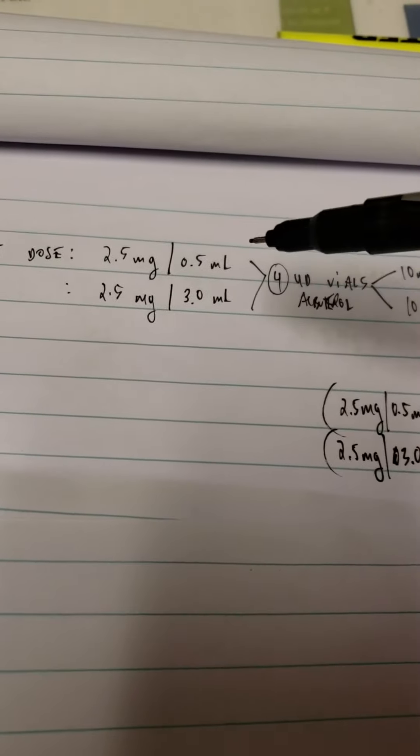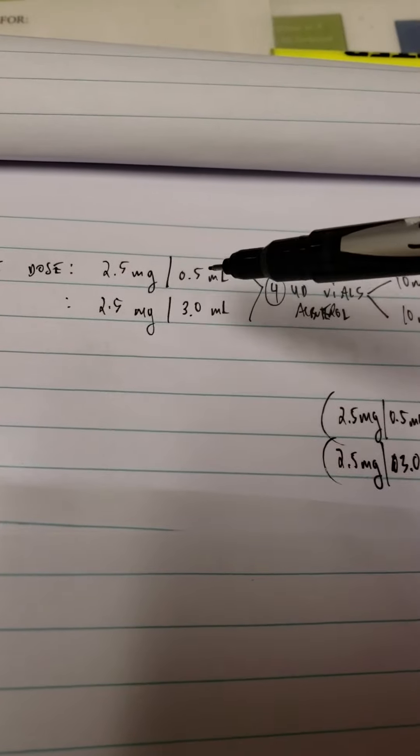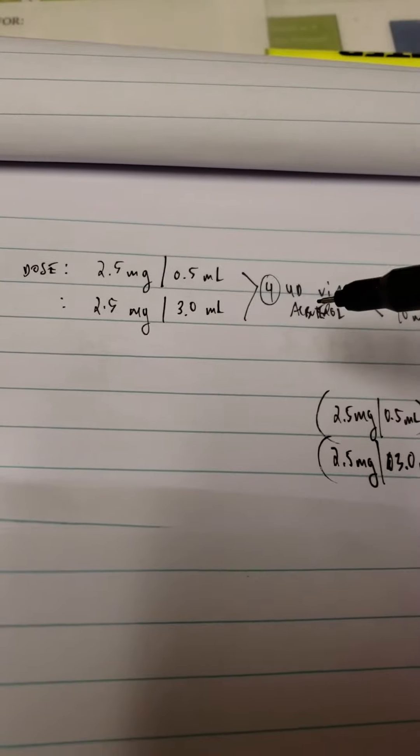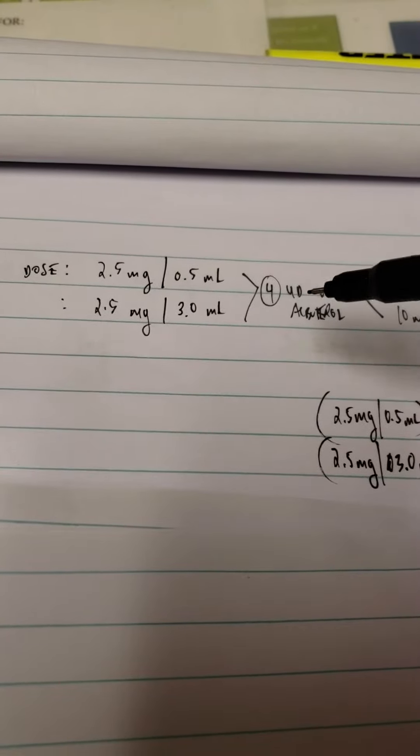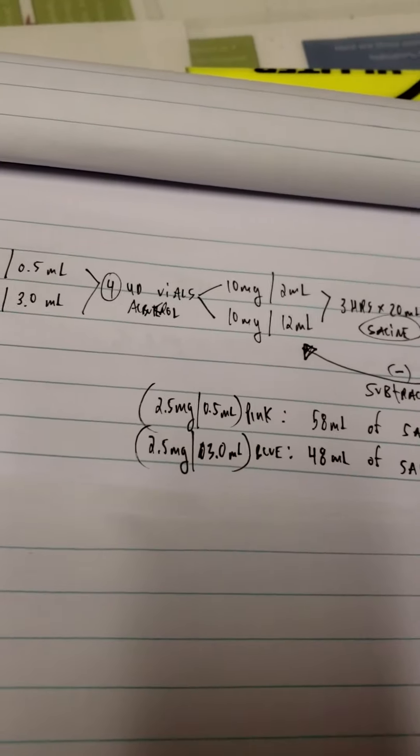confused on which one is a unit dose, I have both right here. 2.5 milligrams in half a ml, 2.5 milligrams in three ml. What they're saying is four unit doses of that albuterol. Even if I were to use both...